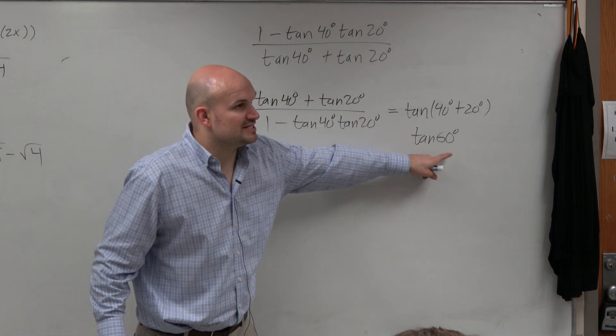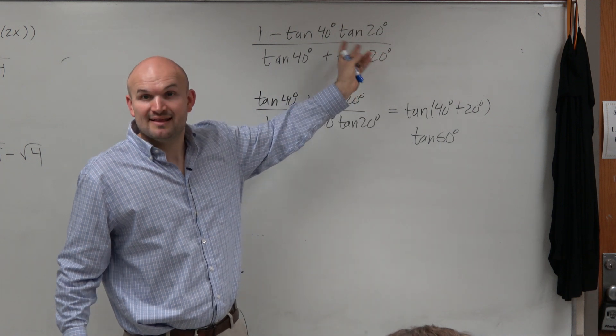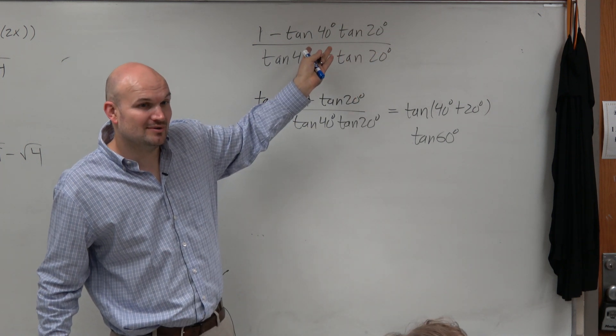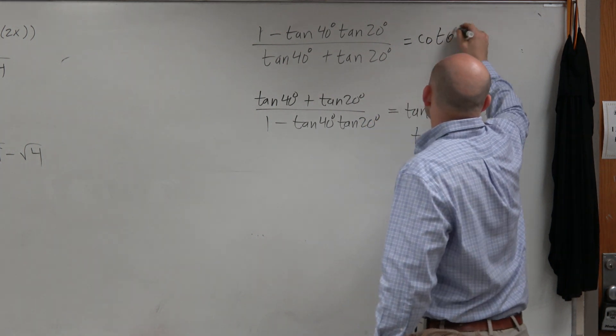So if this is equal to tangent of 60 degrees, and this is just the reciprocal of it, then this would be equal to cotangent of 60 degrees.